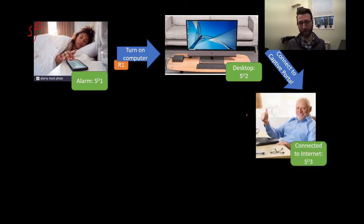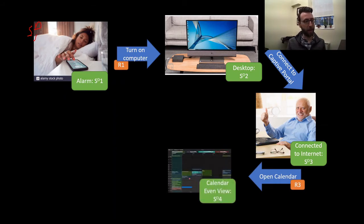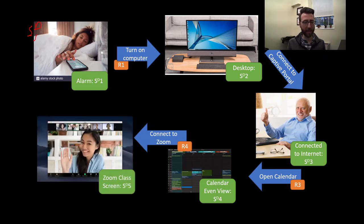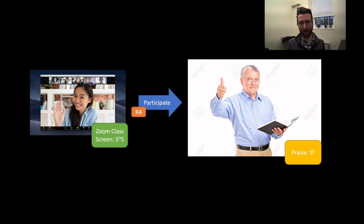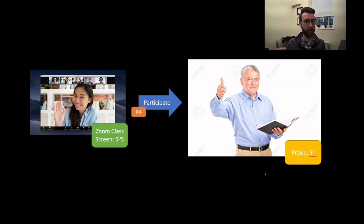We go through that process and get our connected-to-internet confirmation screen — that's discriminative stimulus number three. We can now perform response number three, which is to open our calendar. Our calendar view is our fourth discriminative stimulus, which prompts the behavior of connecting to Zoom — that's response number four. Now we see our Zoom class screen; we're connected, and that is discriminative stimulus number five. Our fifth discriminative stimulus prompts the behavior of participation, which results in praise from your faculty member. Praise is our reinforcing stimulus — it makes the preceding behavior more likely, and by association with everything else in the chain, makes all of those other behaviors more likely as well. That's how the chaining of behavior is strengthened naturally.